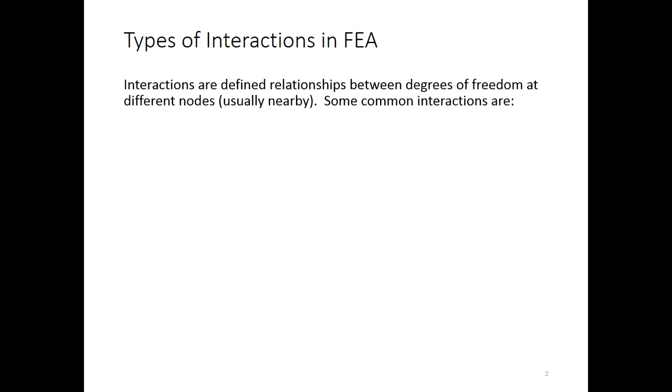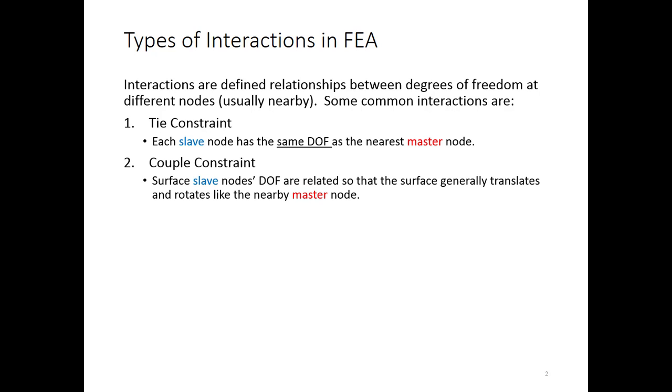An interaction in particular is some relationship between degrees of freedom, usually between degrees of freedom that are near each other. Some common interactions that we see are a tie constraint, where you have slave nodes and master nodes and they have to move together. So they have the same degrees of freedom, they are forced to be the same.